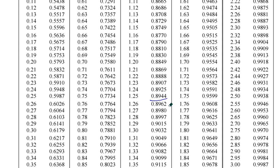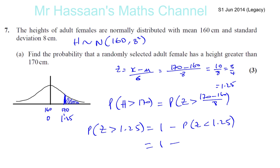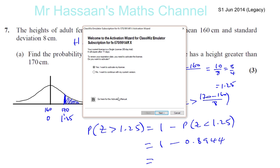0.8944. Okay, so we have 0.8944. 0.8944. And you can then just write down what the value is, which is 1 minus that.